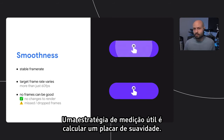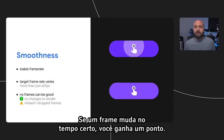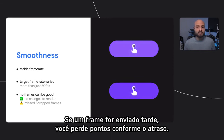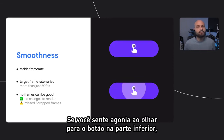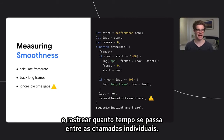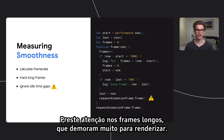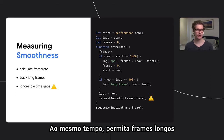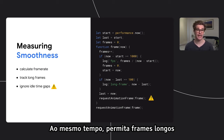One potentially useful measurement strategy is to calculate a smoothness score. If a frame ships on time, you get a point. If a frame ships too late, you deduct points depending on the delay — a low smoothness score if you can feel the agony. To measure smoothness, we could run a RAF loop and track how much time elapses between individual calls, paying attention to long frames that take too long to render, while also allowing long frames when there's nothing to render without hurting our score.